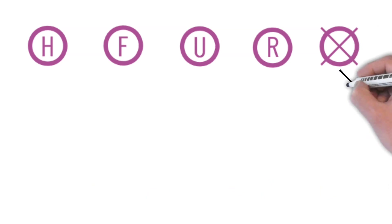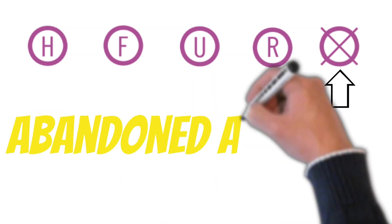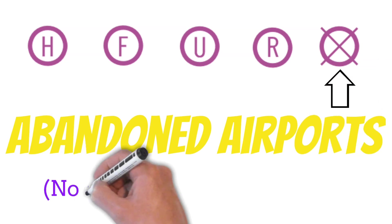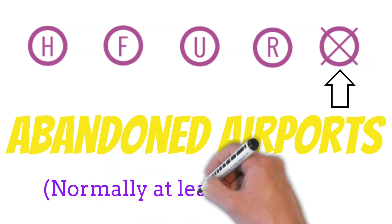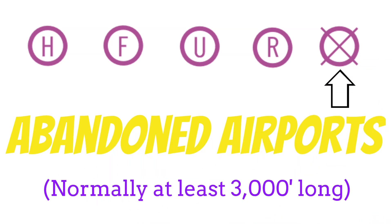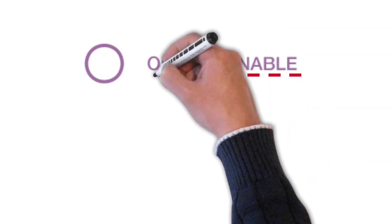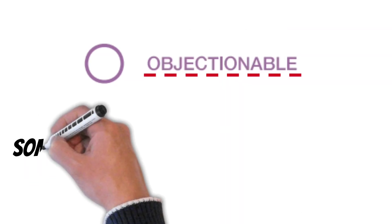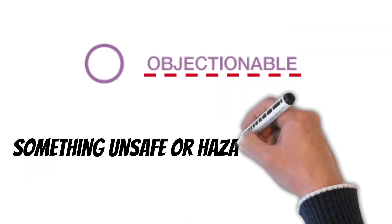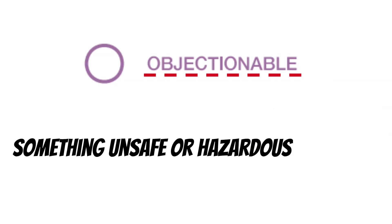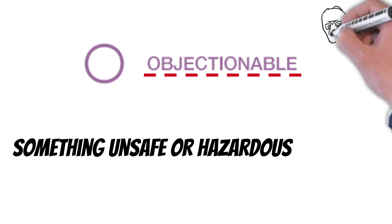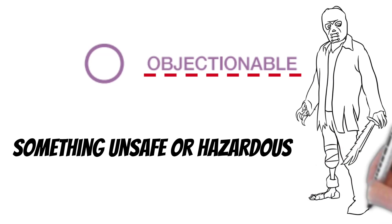Speaking of emergencies, if you ever see a magenta circle with an X inside, this indicates an abandoned airport. Typically these are only charted if they're at least 3,000 feet long, and that makes them great places to make an emergency landing. On rare occasion, you might see this symbol with the word 'objectionable' beside it. The FAA believes there's something unsafe or hazardous about this airfield — often some kind of obstacle — but you never know what's lurking at the end of the runway.